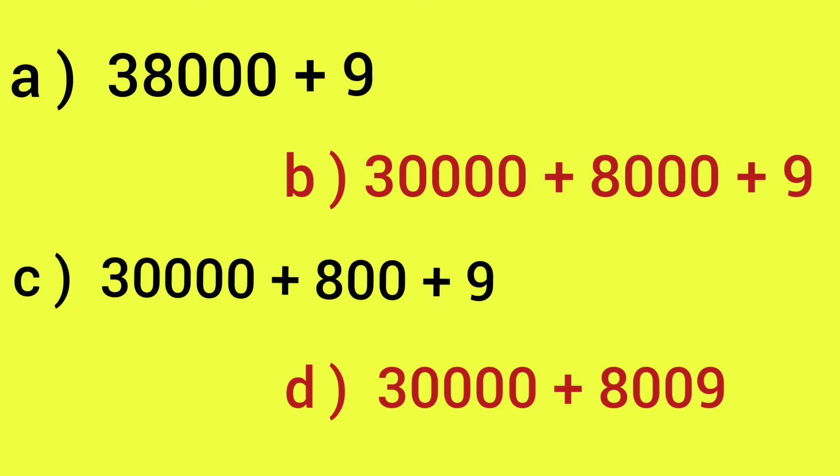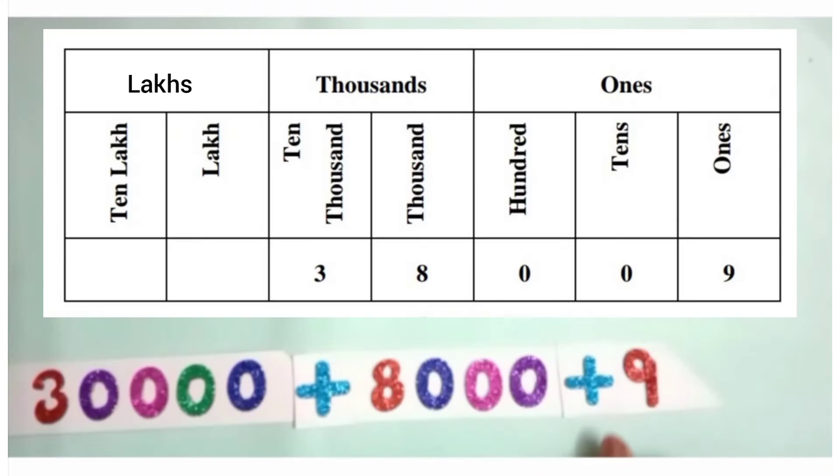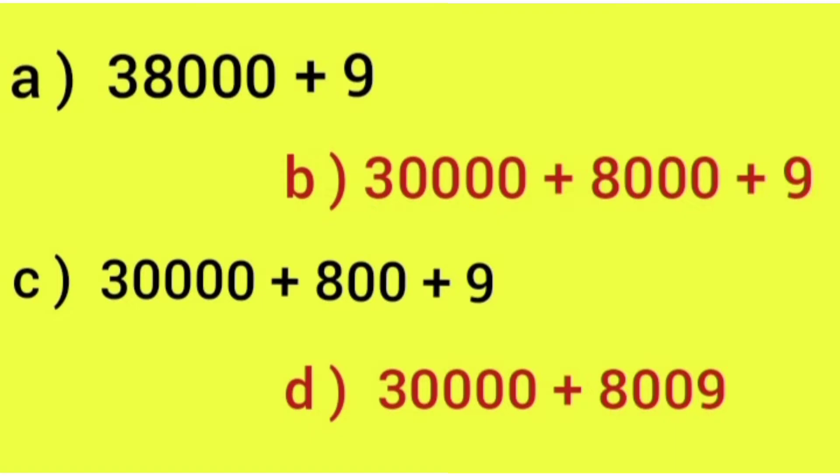For this question, we have 4 options. Option A: 38,000 plus 9. Option B: 30,000 plus 8,000 plus 9. Option C: 30,000 plus 800 plus 9. And option D: 30,000 plus 8,009. We have seen the expanded form of 38009, that is 30,000 plus 8,000 plus 9. So our correct answer is option B.